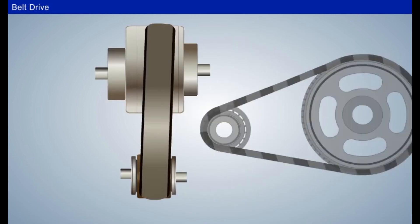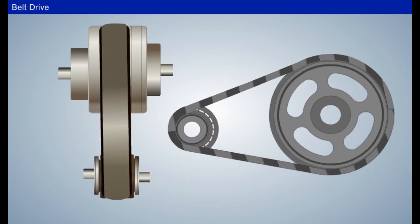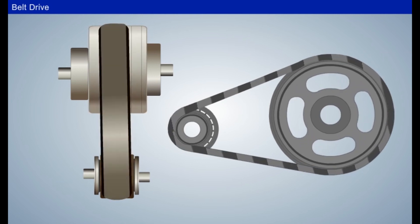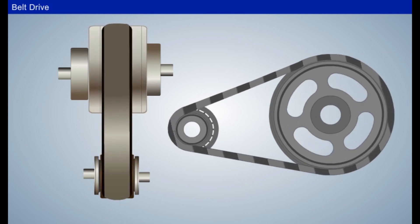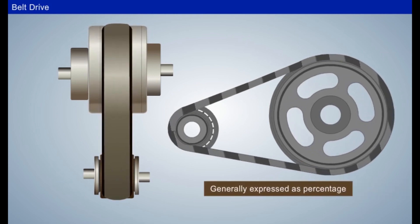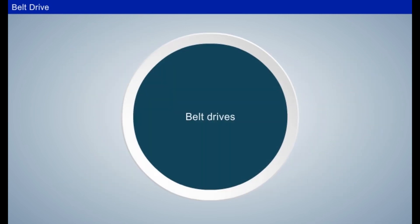Slip is the lack of frictional grip. This may cause some forward motion of the driver without carrying the belt with it. It is generally expressed as percentage. There are four types of belt drives.